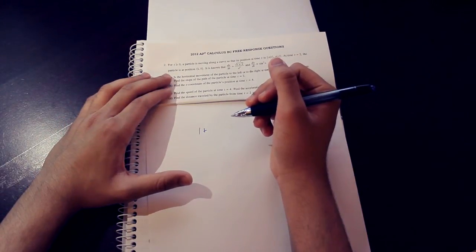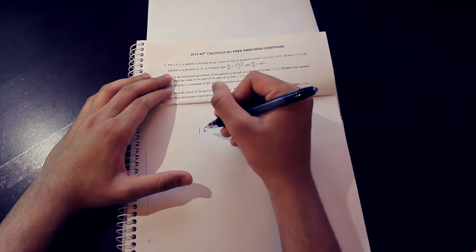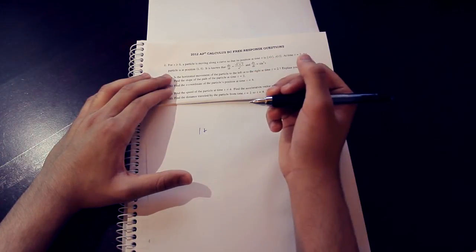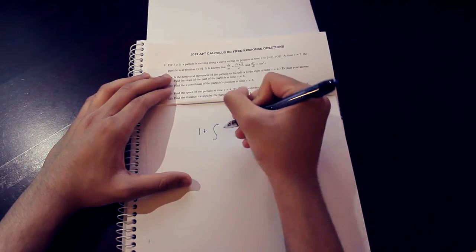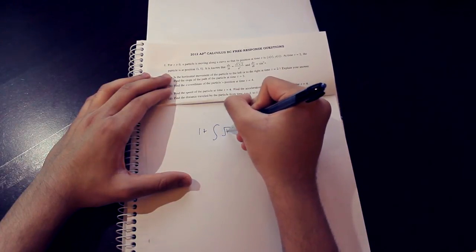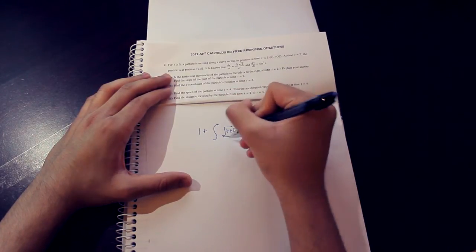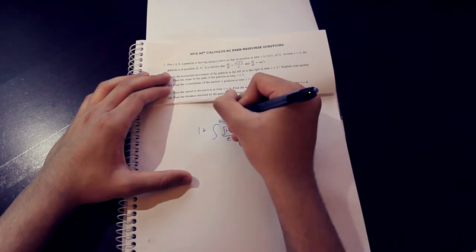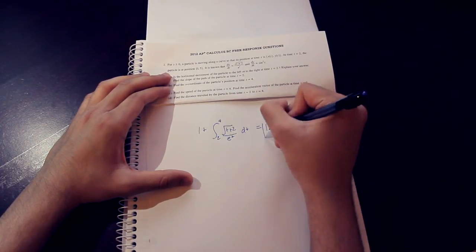The final formula for finding the result is this. We have to take the initial position of the particle into account, and our initial position in the x direction is 1 at t equals 2. So we will say 1 plus the integral of dx dt, square root of t plus 2 over e to the t dt from time 2 to 4 gives us an answer of 1.253.